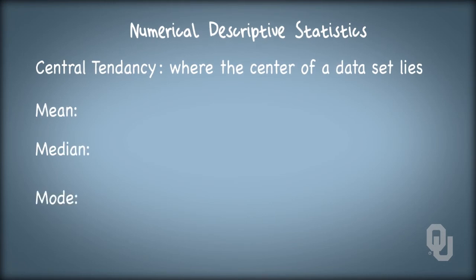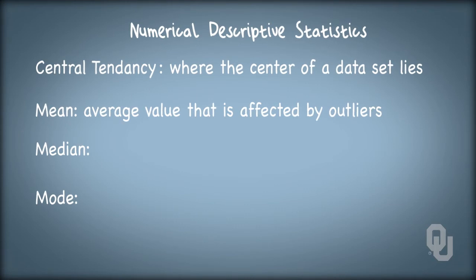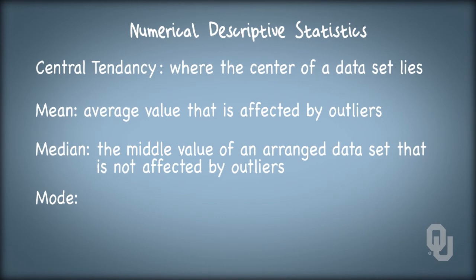The mean is the average value that is affected by outliers, while the median is the middle value of an arranged dataset that is not affected by outliers. The mode is the most likely value in a dataset.